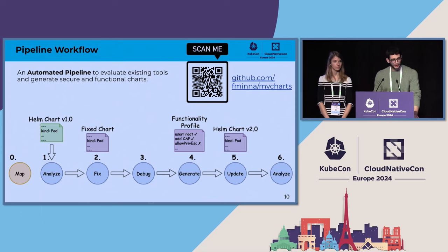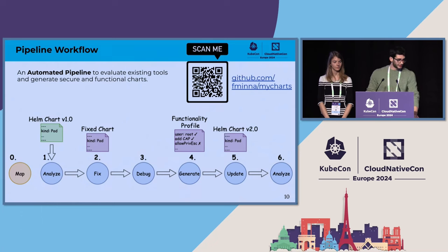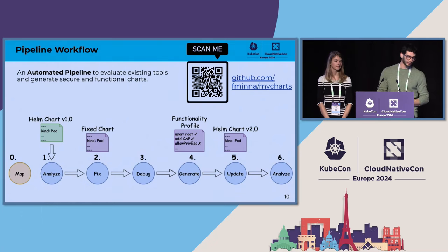It's a pipeline that has six steps, as you can see. It's freely available, so you can scan the code and follow the link. I will show a brief demo of the pipeline. So, there is a step zero — mapping the policies of the tools — which I have a slide for later. The first step takes as input a configuration file. It can be a Helm chart or also a YAML file you have manually written, and it runs a tool to find what misconfigurations are in the file.